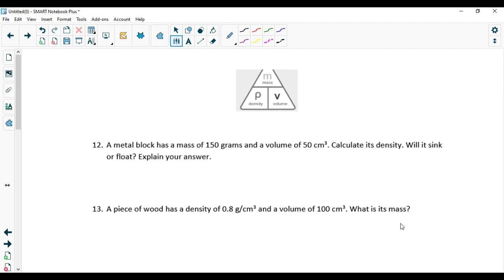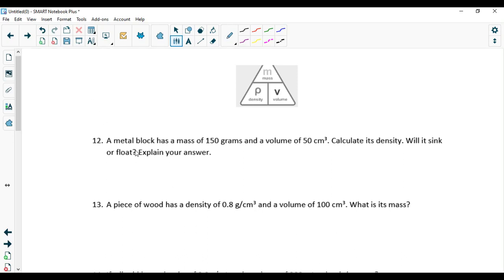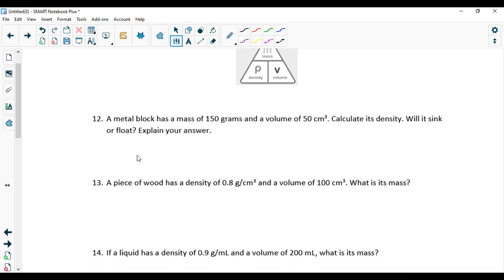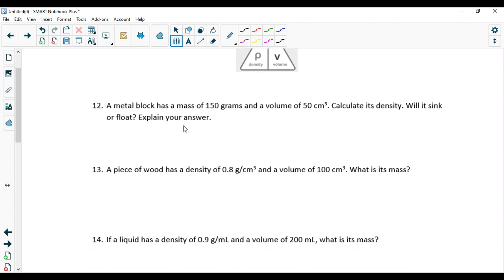Hello everybody and welcome back to this second part of assignment number 12 on your paper. Let's correct it together. A metal block has a mass of 150 grams and a volume of 50 centimeter cubes. Calculate its density. Will it sink or float? Explain your answer.